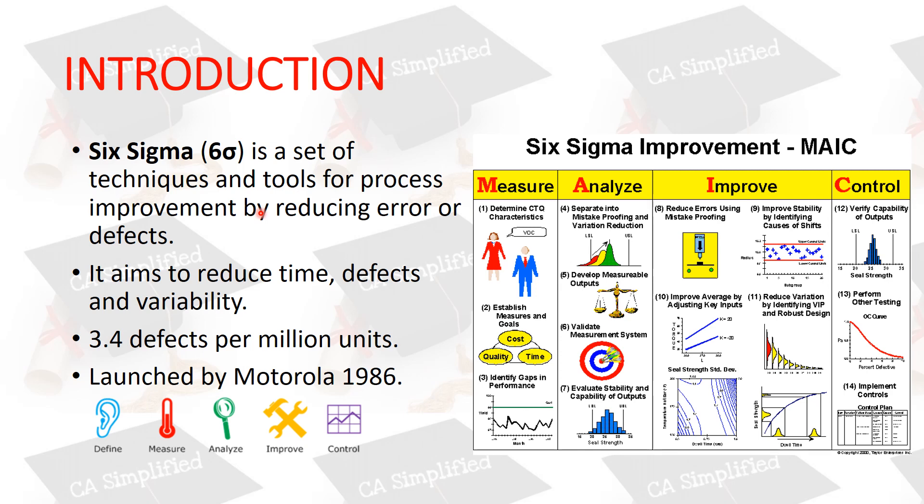Now what is Six Sigma's aim? This will reduce your time, reduce your defects and variability. Plus we aim for 3.4 defects per million units. This concept was adopted by Motorola in 1986, post which it had a great response, and slowly more companies adopted this method.